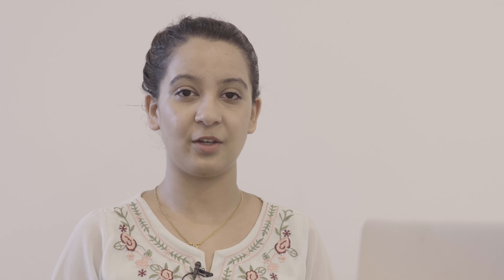Statement of purpose, or SOP, is a detailed description of you and your future goals in association with your reasons to study in Australia. Immigration will read your statement of purpose and double-check the points that you've mentioned with the evidences that you give them.